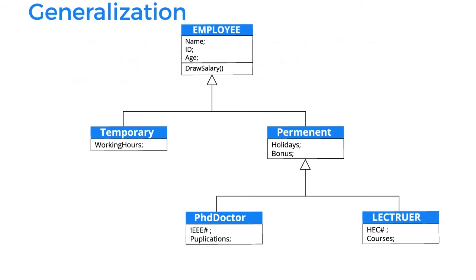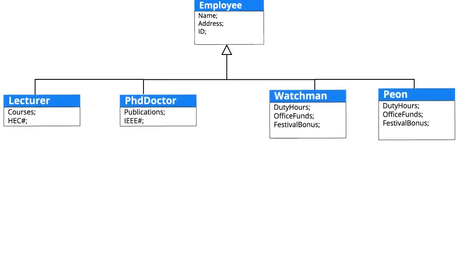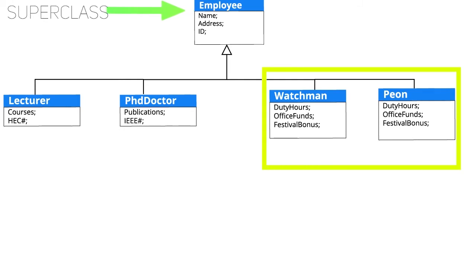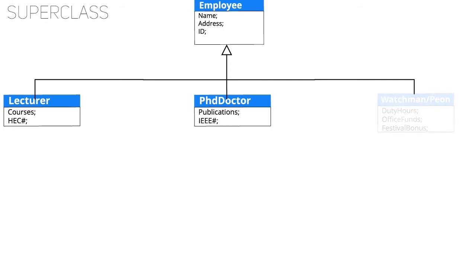Let's take another example of generalization. Here, employee is divided into four subclasses: lecturer, PhD doctor, watchman, and peon. If a situation occurs where two classes contain exactly the same properties — like watchman and peon both containing the same three properties of duty hours, office fund, and festival bonus — we can combine both classes into one and name it as we like.